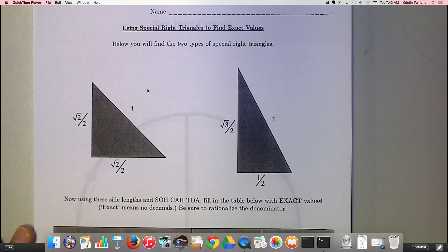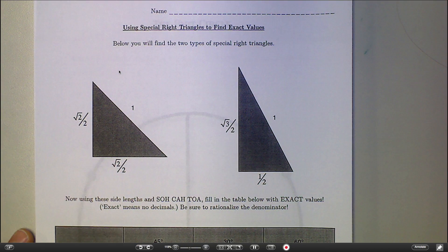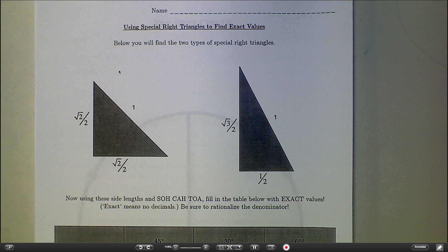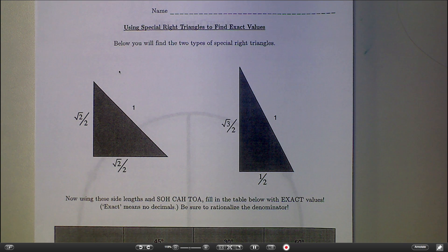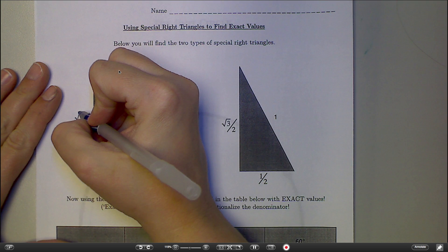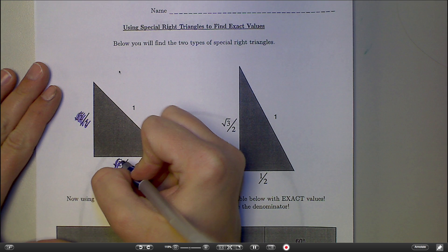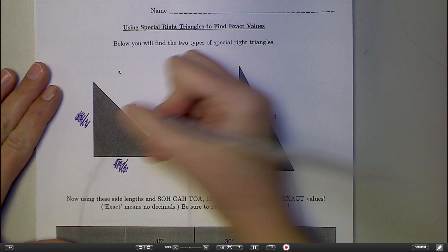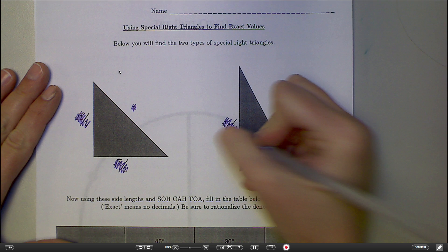When you're done with your quiz, you're going to start on this activity using special right triangles to find exact values, which is located in your notes packet. The first thing you're going to do before you start anything else is scribble out these numbers, because I decided I want to be a little more general here.